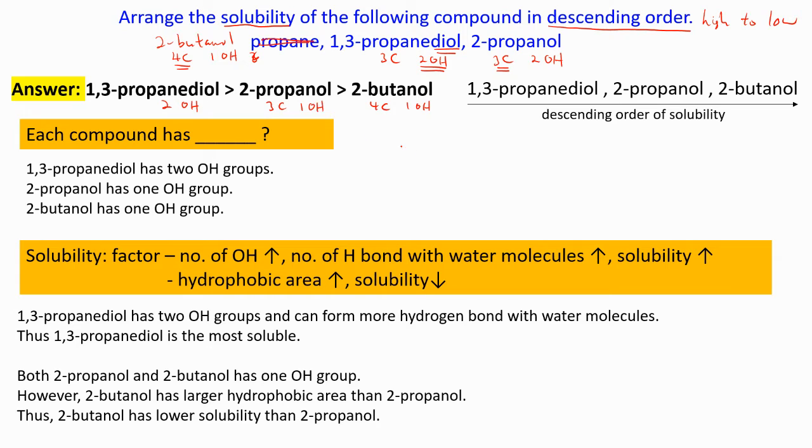Now how to explain them? Always start with each compound has what. What is there in each compound? First of all we explain one by one. 1,3-propanediol has 2-OH groups, 2-propanol has 1-OH group, 2-butanol has 1-OH group. Now we have explained each compound.